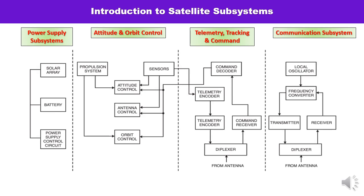First is the power supply subsystem. Its elements include solar array, battery, and power supply control circuitry. For a communication satellite, electrical power supply is required to run the spacecraft. When the satellite is in stationary orbit, power supply is required. Solar cells are photovoltaic cells that convert solar radiation into electricity, which is then converted to the required voltage level in the power supply.